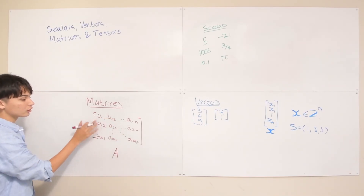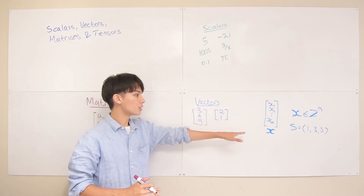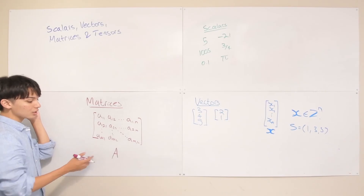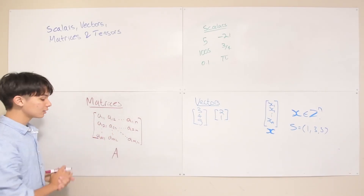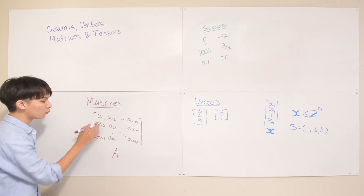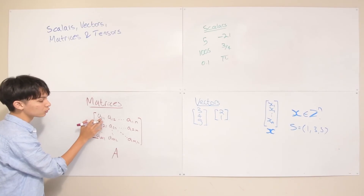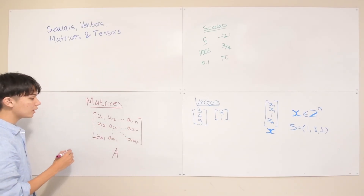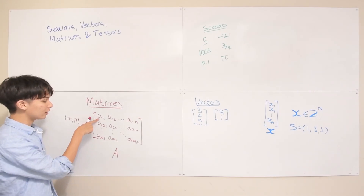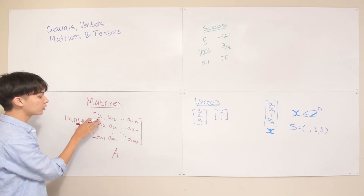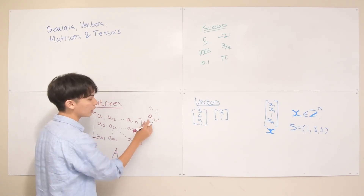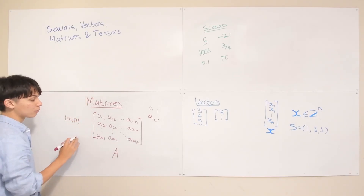Each element is indexed with two numbers: the row and the column. So A₁₁ is the element in the first row, first column. A₁₂ is the first row, second column. A₁ₙ is still in the first row but at the very last column. To define this general matrix, you would declare A as an element of ℝ^{m×n}, where m is the number of rows and n is the number of columns.